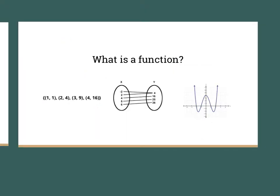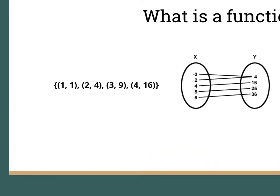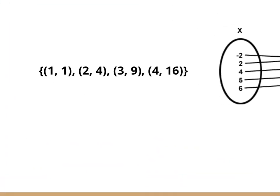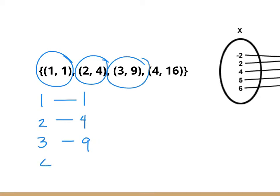Now, let's consider the second set. If we focus our attention on the set of ordered pairs, we can see that 1 is paired to 1, 2 is paired to 4, 3 is paired to 9, and 4 is paired to 16. We take a look at every x, each of them is only paired to a single value in y. Therefore, this relation is an example of a function.